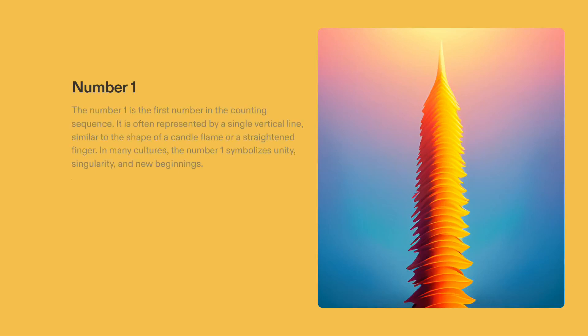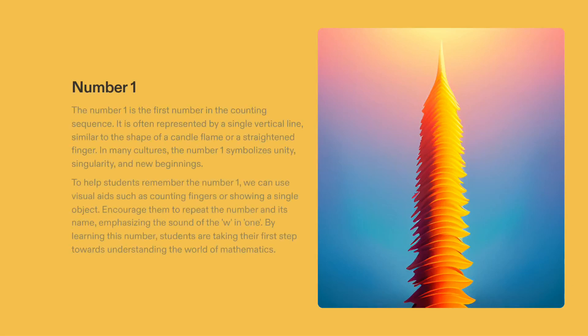It is essential for students to learn and identify the number one, as it is arguably the most important number of all. Its vertical form is used to signify unity, singularity, and new beginnings. To aid in learning the number one, we can use visual aids such as counting fingers or showing a single object, as well as helping them recognize the sound of the 'w' in one.